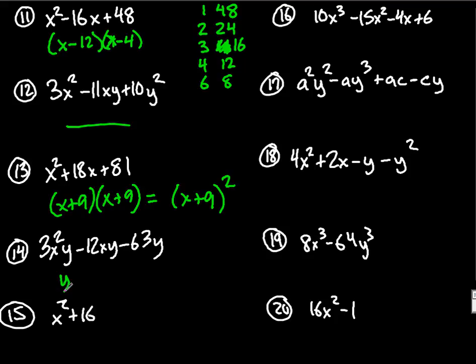In number 14, they all have a y in common, they all have a 3 in common. When you divide those out, I'll have x squared minus 4x and minus 21. So now I can factor that more. What multiplies to 21 and subtracts to 4?